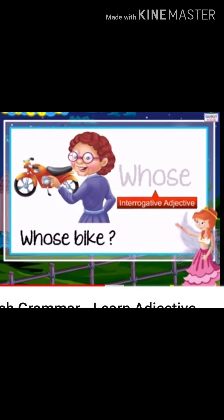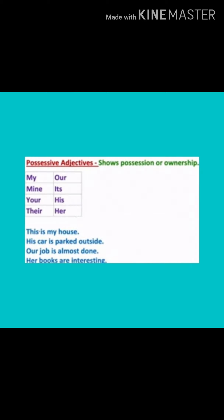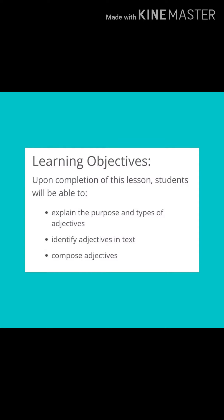The sixth kind of adjective is the possessive adjective. A possessive adjective shows the possession or ownership. For example, my, mine, his, her, theirs. If I say, that is my house, so my is the possessive adjective. If I say, that house is mine, then mine is again a possessive adjective.